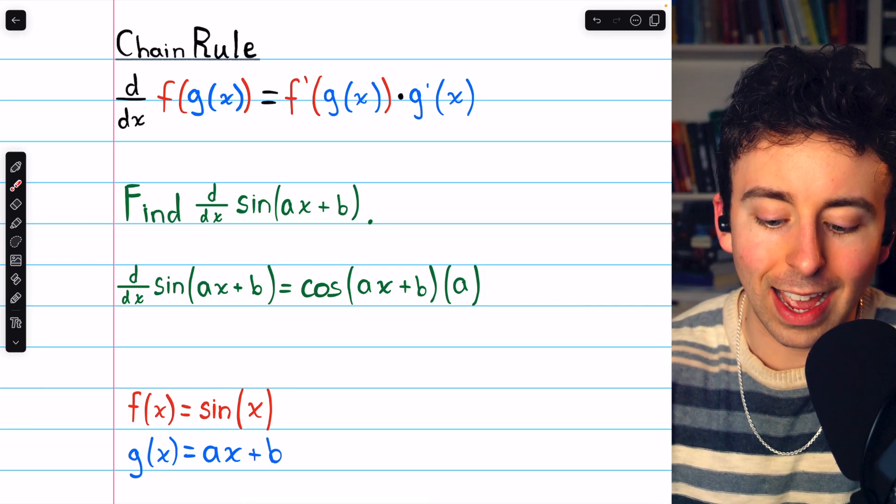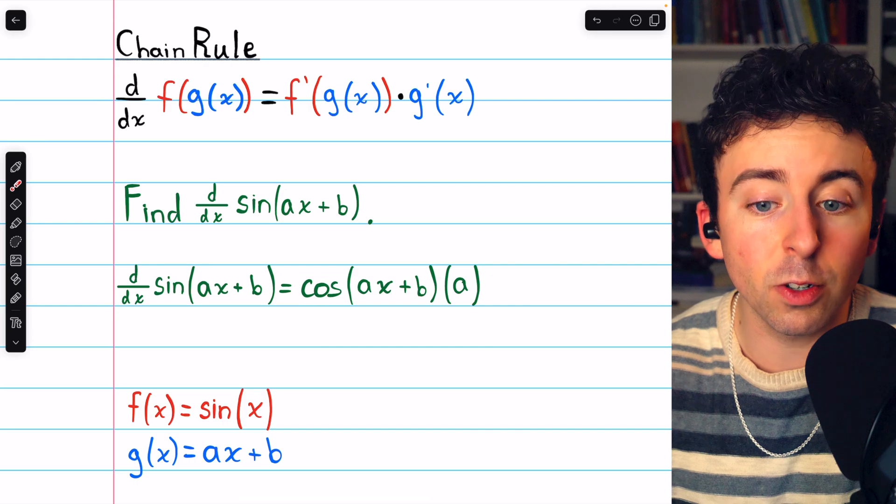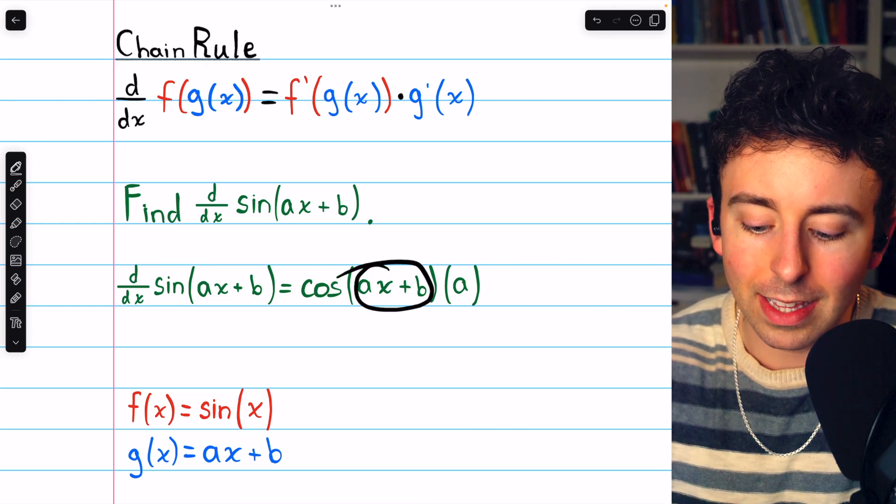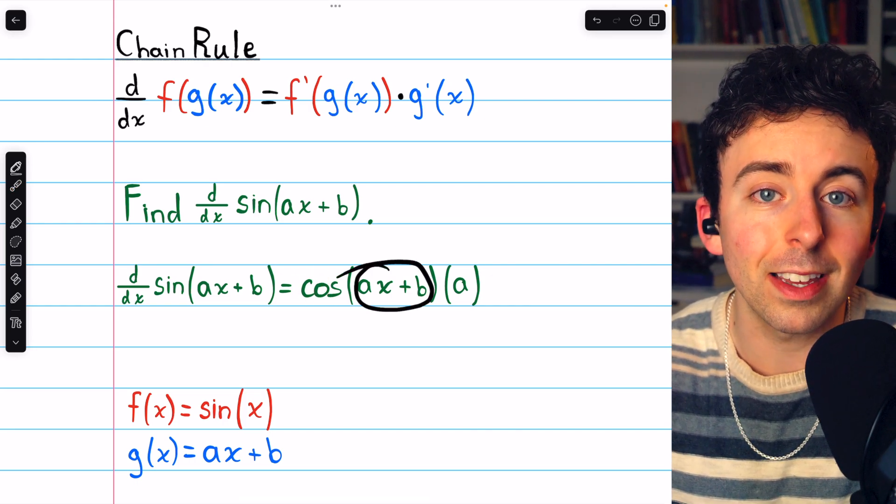The outside function is sine, and its derivative is cosine, but make sure to leave the inside function, ax plus b, unchanged.